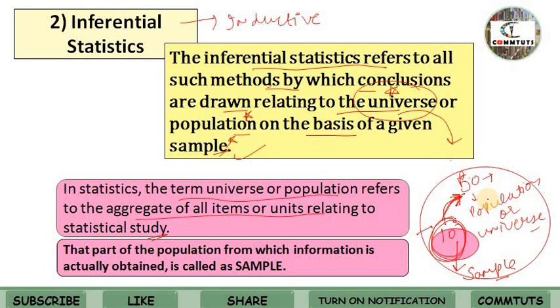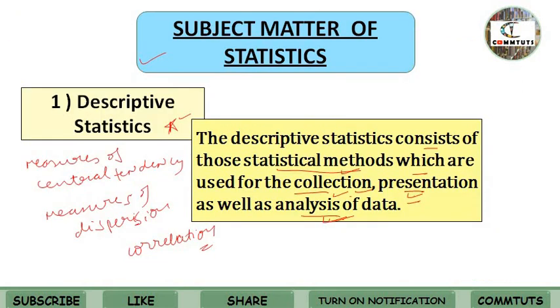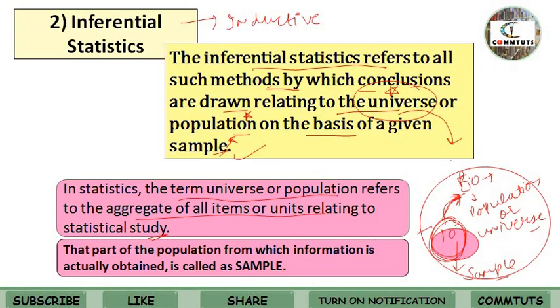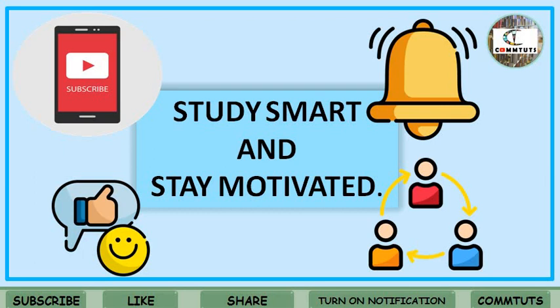So this was basically inferential statistics and descriptive statistics. Inferential statistics consists of all methods by which you draw conclusions about the universe or population. Descriptive statistics is where we collect, present, and analyze data — covering central tendency, dispersion, and correlation. I hope you are clear on the subject matter of statistics and nature of statistics. If you have any doubts, please message in the comment section. Please subscribe to my channel, turn on notifications, hit the like button, and share my tutorials with your friends and classmates. Thank you for watching — study smart and stay motivated.